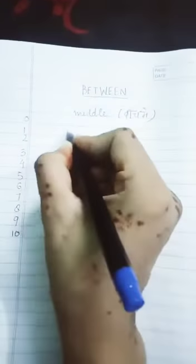So like for example, ab hum loog between pahdhne se pehle dekhte hai ki between hota kya hai? Between ke liye three numbers ka hona must hai. Kyunki hum log ko ismei pata karna hai ki do number ki beech mein kaun sa number aata hai. Two numbers will be given and you have to find which number comes in between both the numbers.